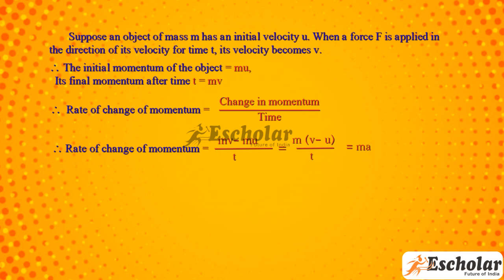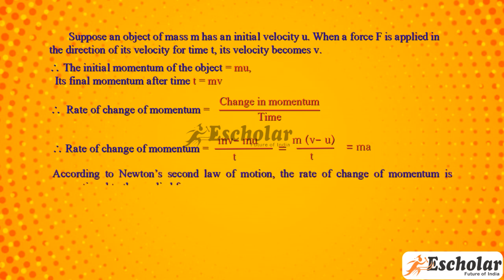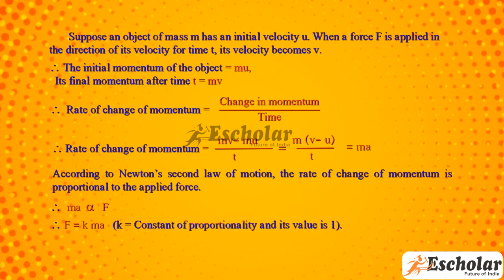The rate of change of momentum equals MV minus MU divided by T, which equals M(V minus U)/T, which equals MA. According to Newton's second law of motion, the rate of change of momentum is proportional to the applied force: MA ∝ F, that is F = KMA. K is the constant of proportionality and its value is 1, therefore F = MA.